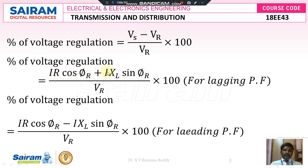This formula is expressed for percentage voltage regulation for lagging power factor. We can also express the same formula for leading power factor. For leading power factor, the formula is: Ir·cosφr minus I·xl·sinφr, divided by Vr, into 100.